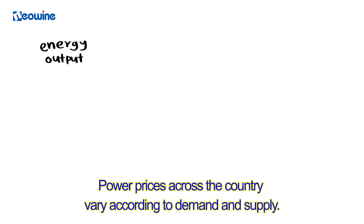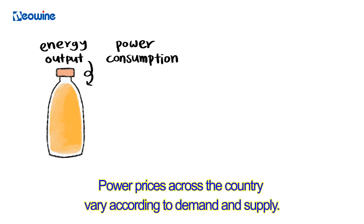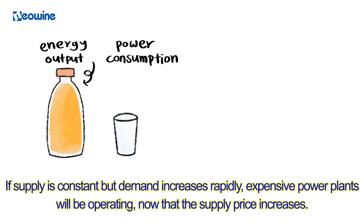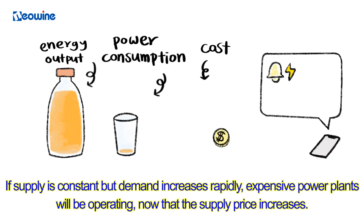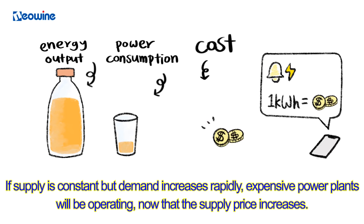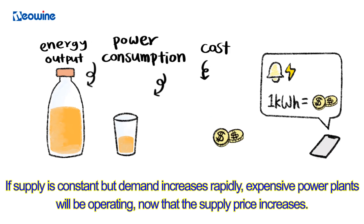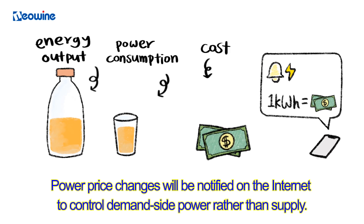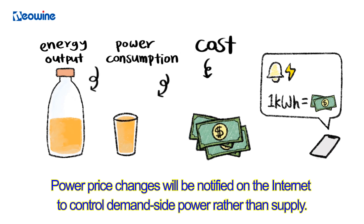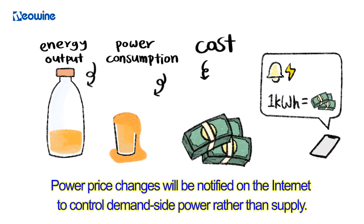Power prices across the country vary according to demand and supply. If supply is constant but demand increases rapidly, expensive power plants will be operating and the supply price increases. Power price changes will be notified on the internet to control demand-side power rather than supply.